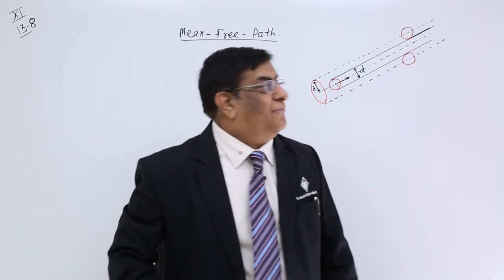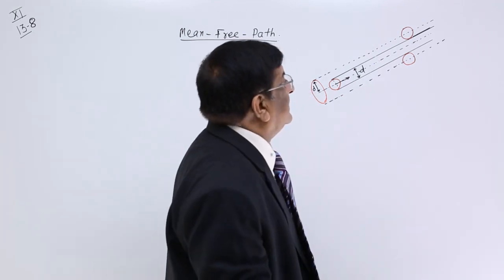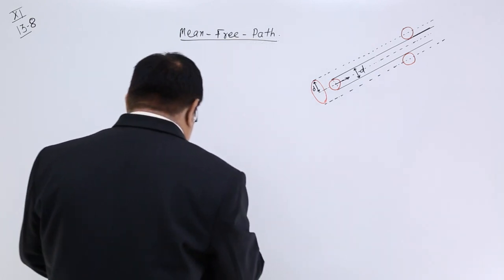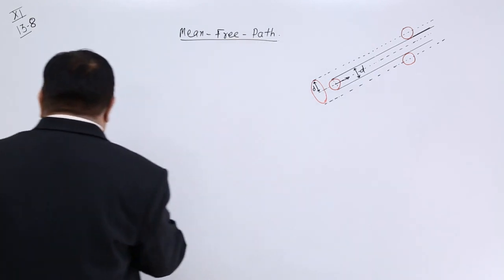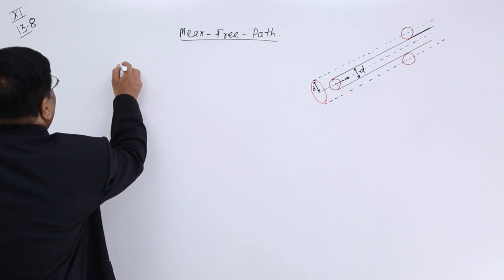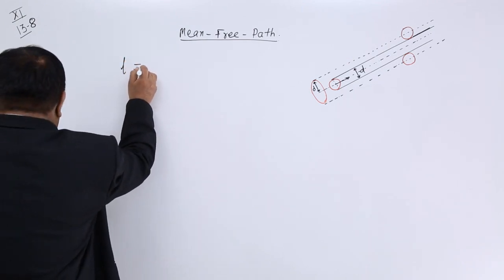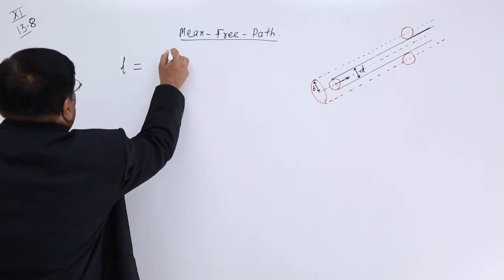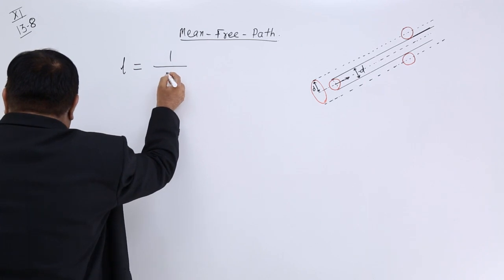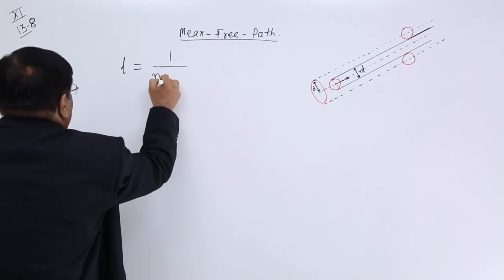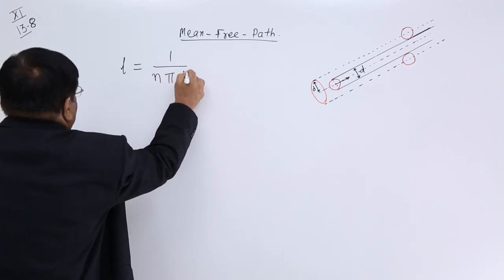So we have a relation of free path and we can write that relation depends upon diameter and this length. Length is equal to 1 upon n pi d square.